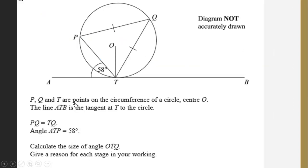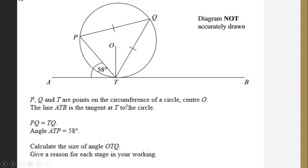PQ and T are points on the circumference of a circle with center O. The line ATB is the tangent at T to the circle. PQ is equal to TQ, so triangle PQT is an isosceles triangle.